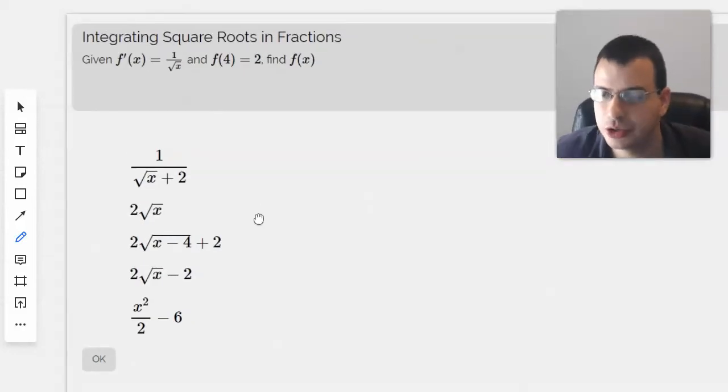Given f prime of x equals 1 over the square root of x and f of 4 equals 2, find f of x.